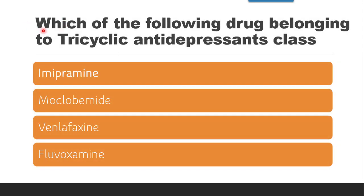Next question: Which of the following drugs belongs to the TCA (tricyclic antidepressant) class — imipramine, meclobamide, venlafaxine, or fluoxamine? If you visualize the structure of imipramine, three rings are there. The answer is imipramine.